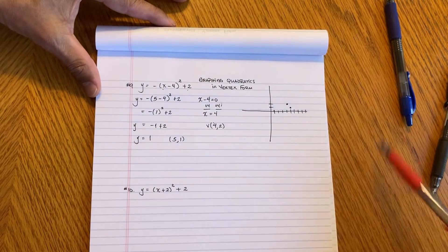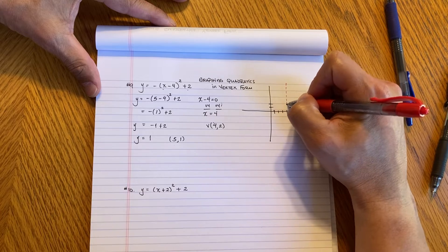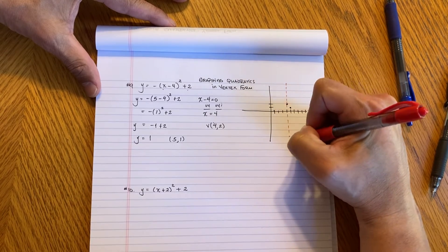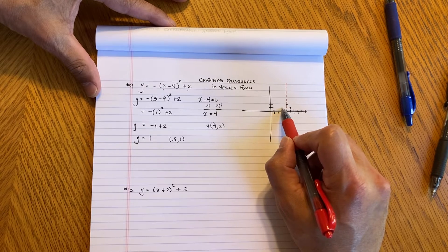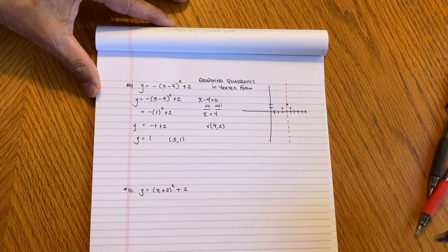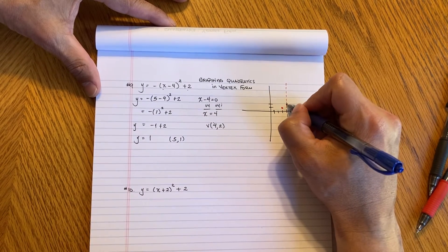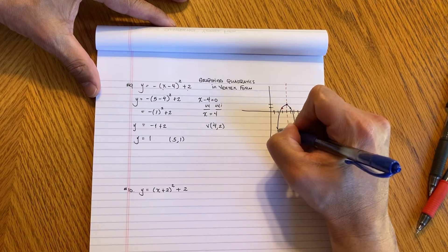Now remember, I know that parabolas or quadratics are symmetrical. So you have a line of symmetry that passes right through the middle. And if it's 1 unit to the right of the line, it's going to be 1 unit to the left of the line. So then I can put this guy right there. And then I know it's going to go downward and I can sketch like this.